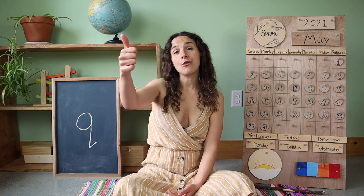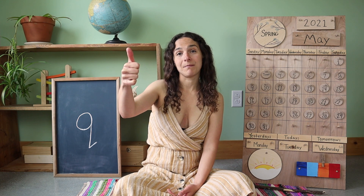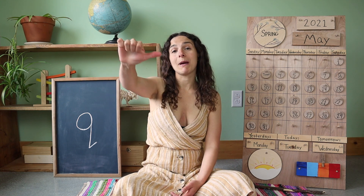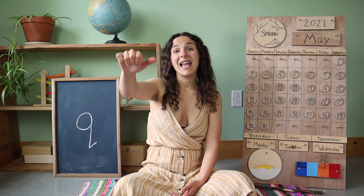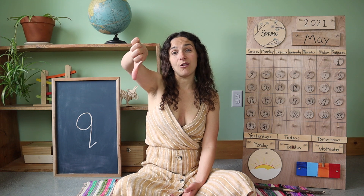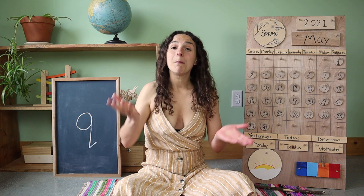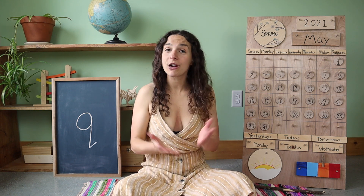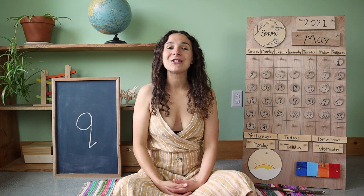Hello friends and welcome back to Unbound Learners Pre-K. How are you doing today? If you're doing well, you can show me with a thumbs up. If you're feeling okay, you can show me by putting your thumb in the middle. And if you're not feeling very well, you can show me with the thumbs down. But hopefully after circle time is over, you'll be feeling better. So let's get started with circle time.